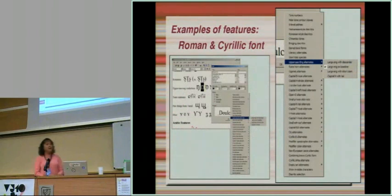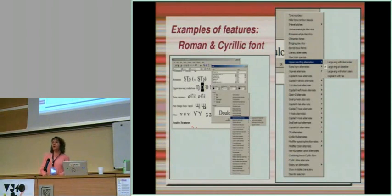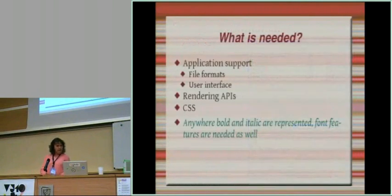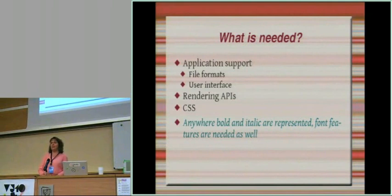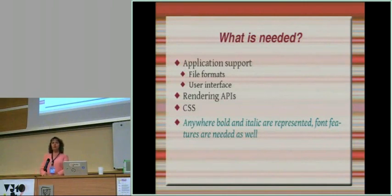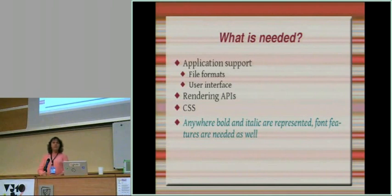Examples of features needing better support: alternate glyph forms — we developed a literacy font with single-bowl 'a' and simpler 'g' easier for teaching reading. Diacritic positioning — Vietnamese and Arabic handle diacritics differently. Optional ligatures for typographical finesse — small caps, kerning, fancy stuff — but the really important ones are those needed by languages where speakers say 'I really need this form or it just looks wrong.' We need applications that can handle these: support in files like bold/italic markup, user interface to set features, rendering APIs to pass feature information to the renderer, and CSS needs to record feature values.